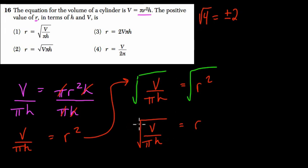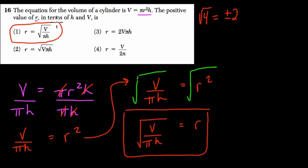But here, we're just looking for the positive root so we can stop. If they were looking for both, you could write that it equals the positive or negative square root of V over πh. So our answer is choice one. Thanks.